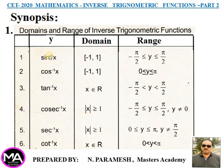Fifth: y = sec⁻¹x. Domain: |x| ≥ 1. Range: closed interval [0, π], except y ≠ π/2.